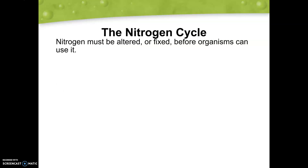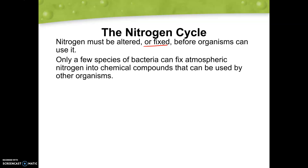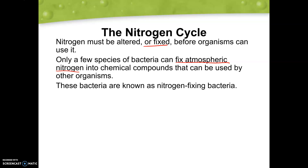Nitrogen must be altered or fixed before organisms can use it, which is why bacteria plays such an important role. Only a few species of bacteria can fix atmospheric nitrogen into chemical compounds usable by organisms. Those specific bacteria take atmospheric nitrogen and turn it into a more usable form. These are known as nitrogen fixing bacteria, and they fix the nitrogen into the soil or water so plants can take it in its usable form.